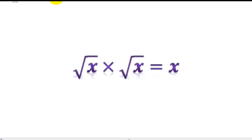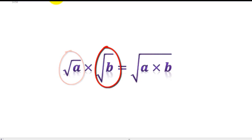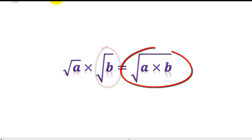The next rule is that the square root of x times the square root of x is simply the square root of x squared, and that equals x. From the fact that the square root of x times the square root of x equals x, we can realise that if we've got root a times root b, this will equal the square root of a times b.